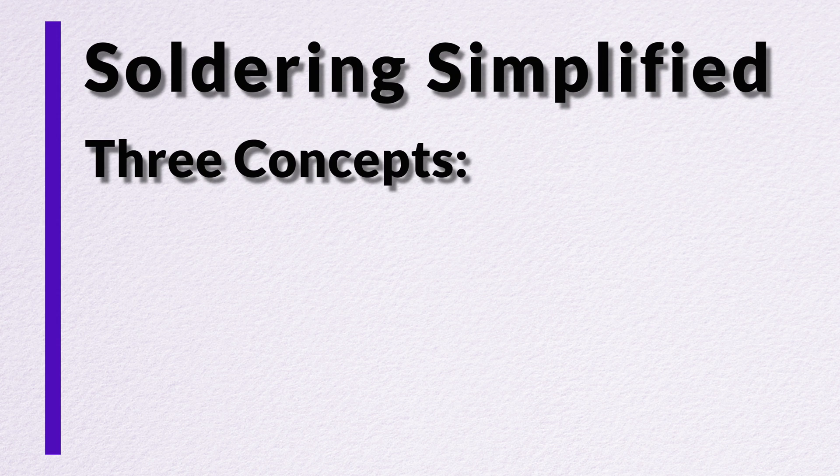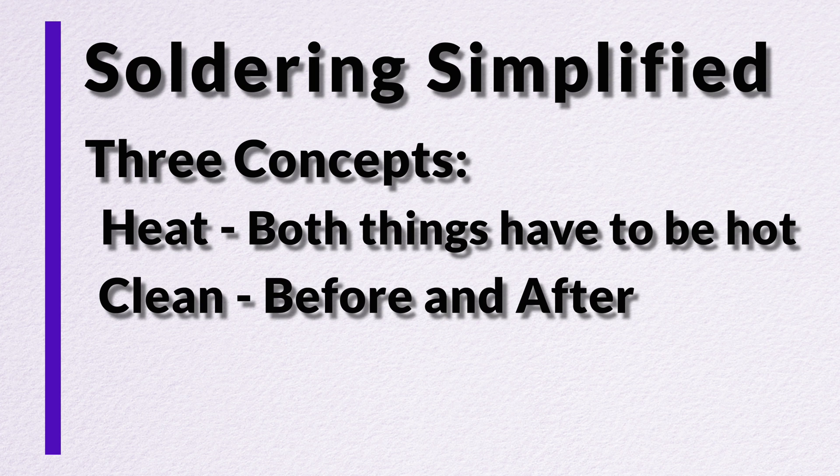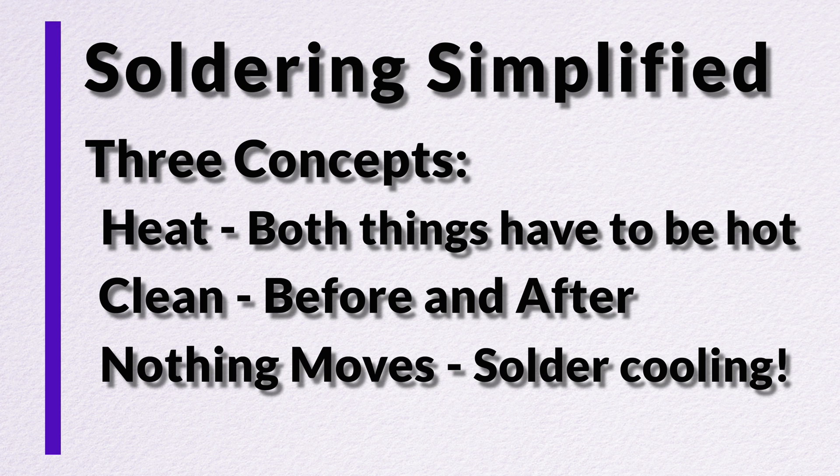Okay, so this was soldering simplified. Once again, let's go over the three concepts you need to get down. Heat. Both pieces of metal have to be above the melting point of solder for the solder to flow correctly. Everything has to be clean. When you're done, you want to clean the flux off. If it's a sensitive circuit, you want to clean it off anyway. And then prior to soldering, if it's an older component or even it's brand new, just brush it off with some isopropyl alcohol. You should be good to go. And then the final piece, make sure nothing moves while the solder cools down, solidifies, and do that and you will be successful in soldering.